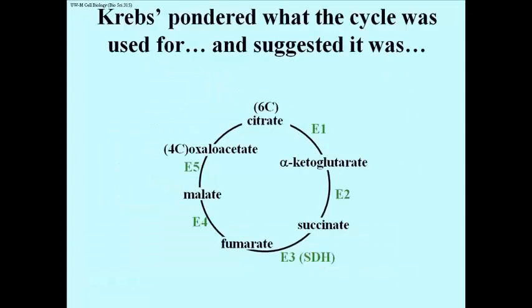Next, Krebs pondered what the cycle would be used for, and he suggested it was a super catalyst. That's a remarkable conclusion. The natural thought process says, this is a pointless thing to be doing. Of course in living things nothing is pointless. This has evolved for a purpose, and Krebs was wondering what purpose could it have.